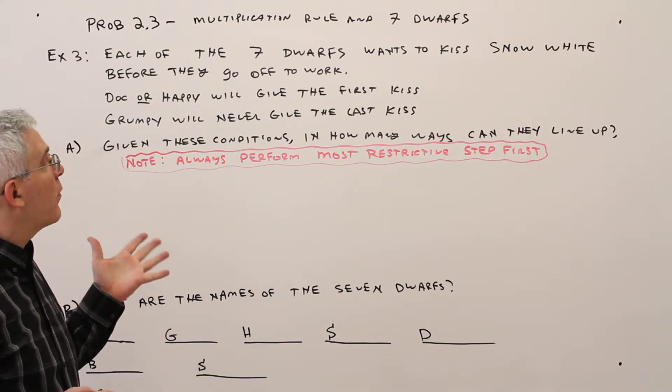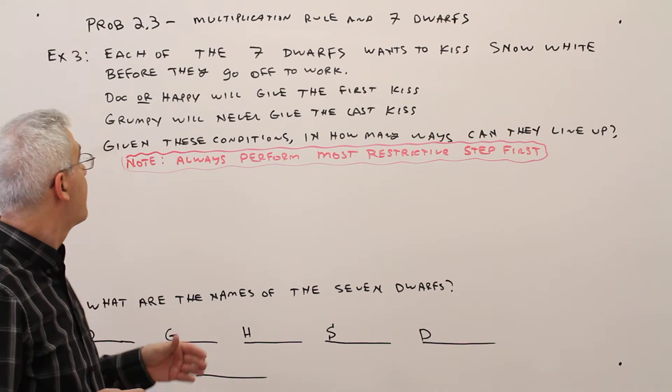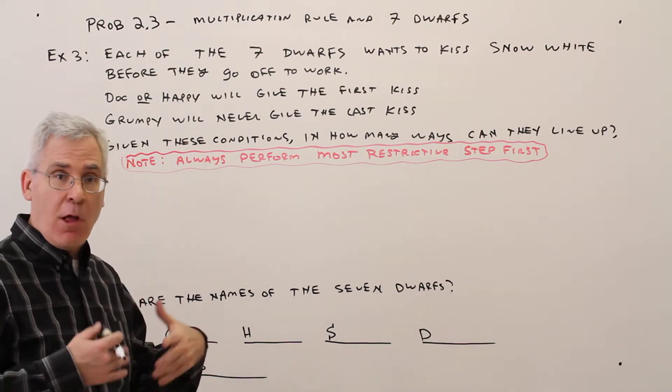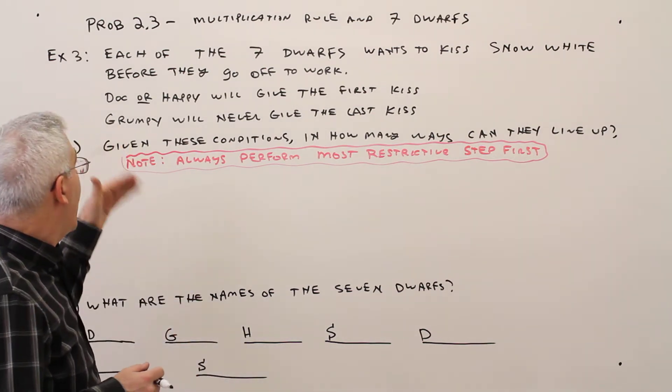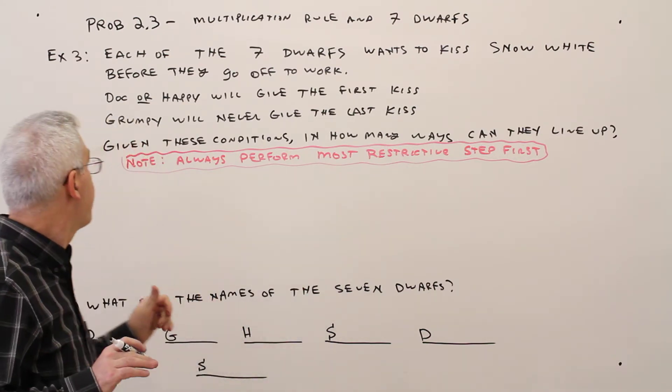Each of the seven dwarfs wants to kiss Snow White before they go off to work. Doc or Happy will always give the first kiss, and Grumpy will never give the last kiss, otherwise he'll be really grumpy.